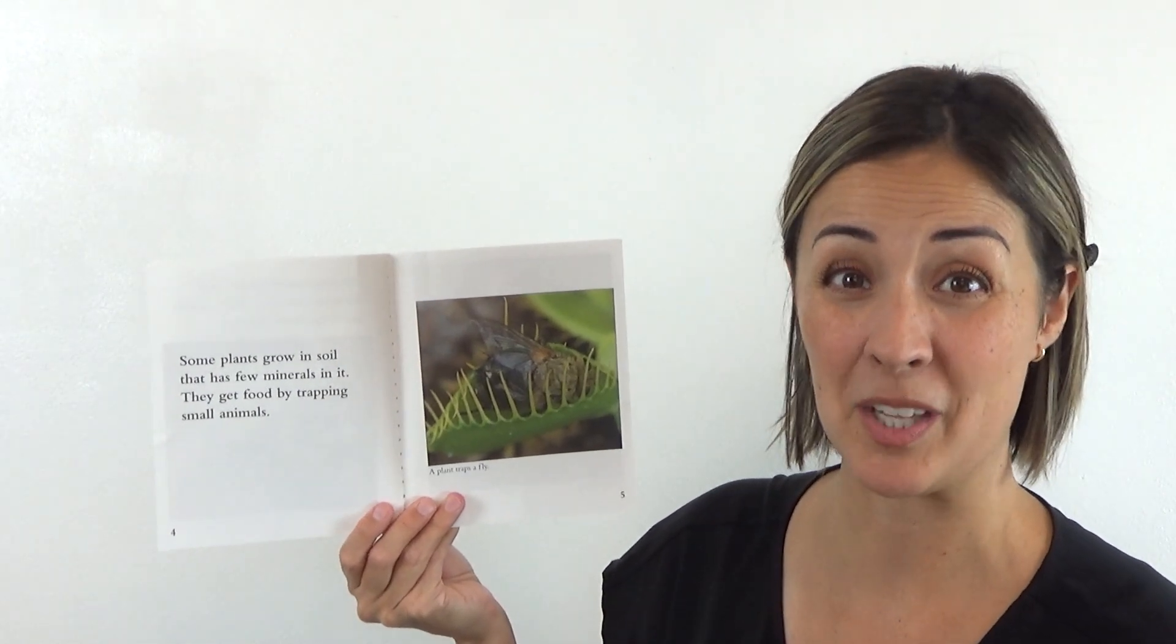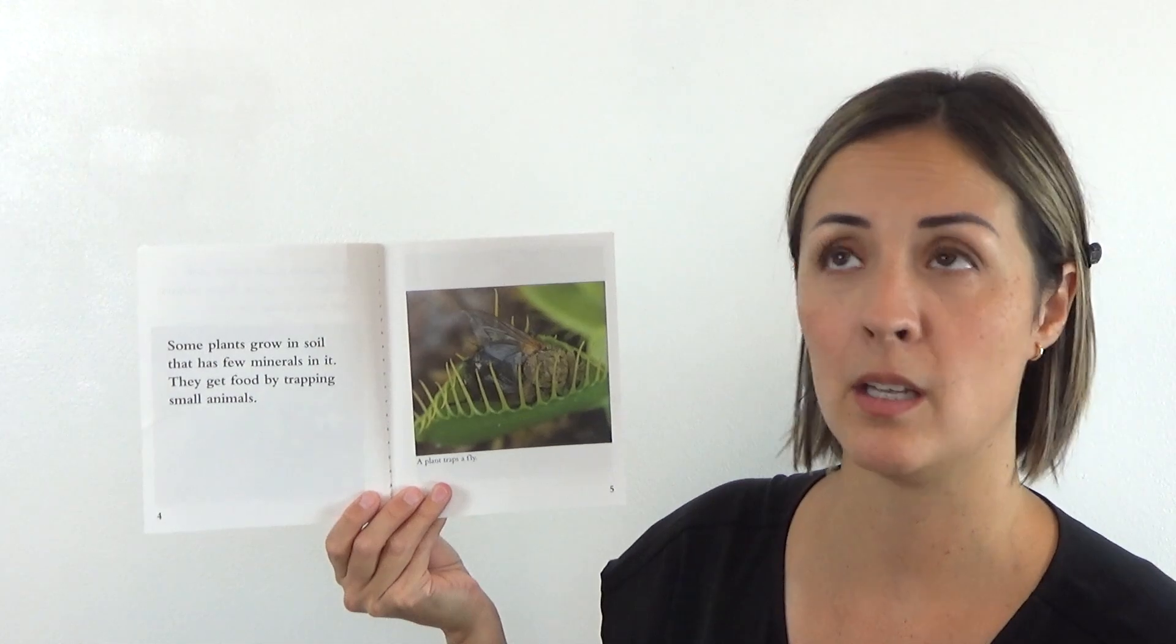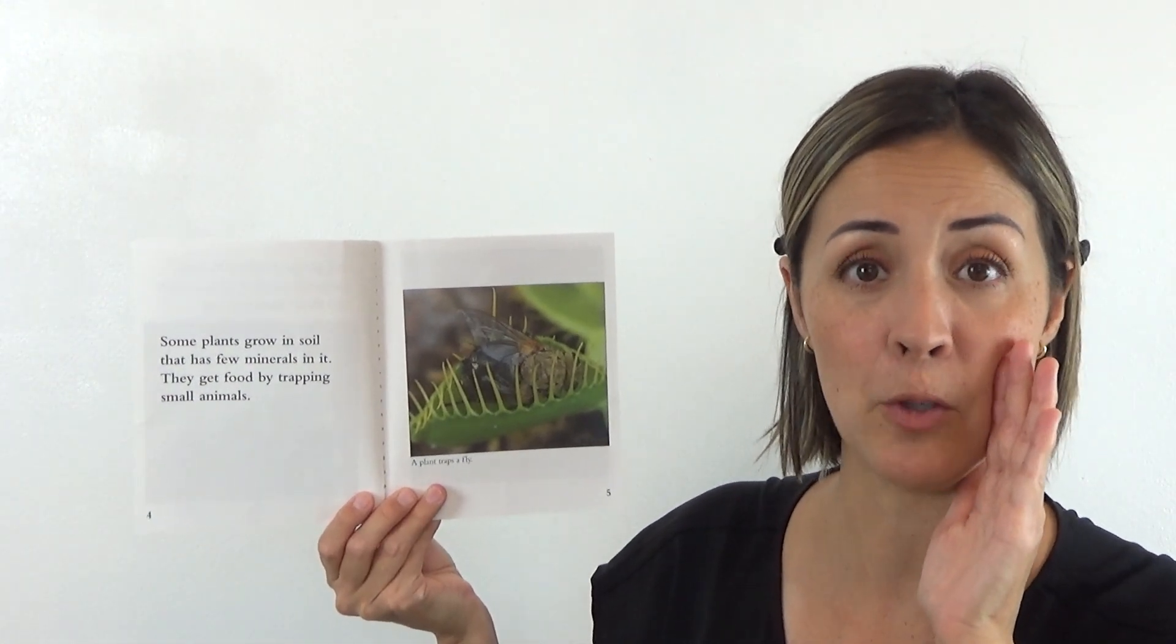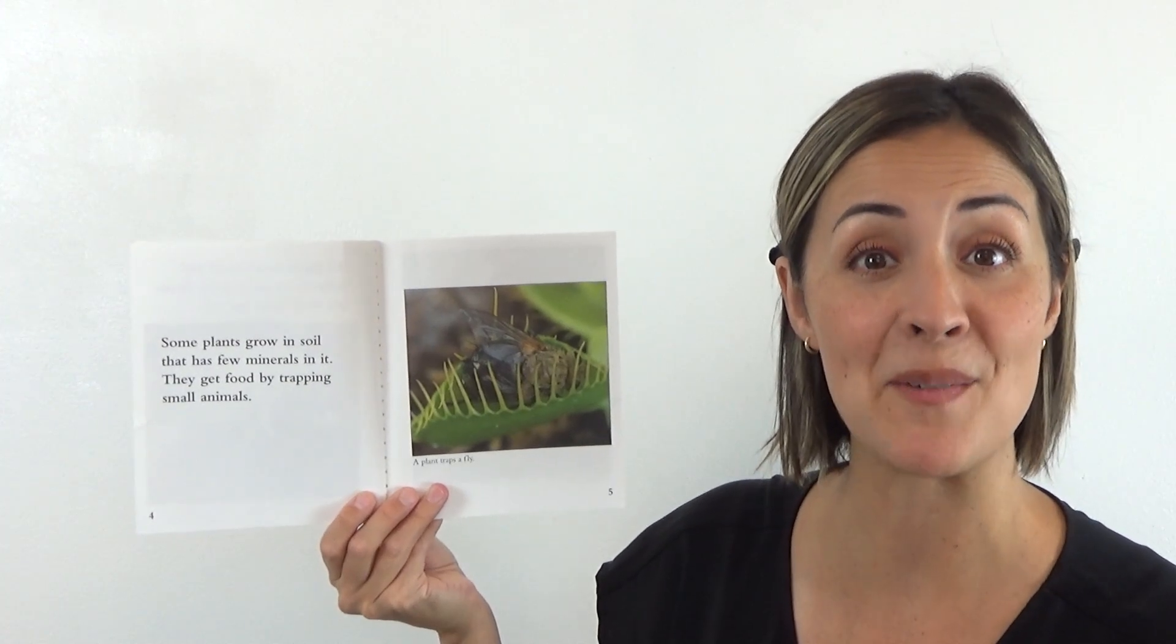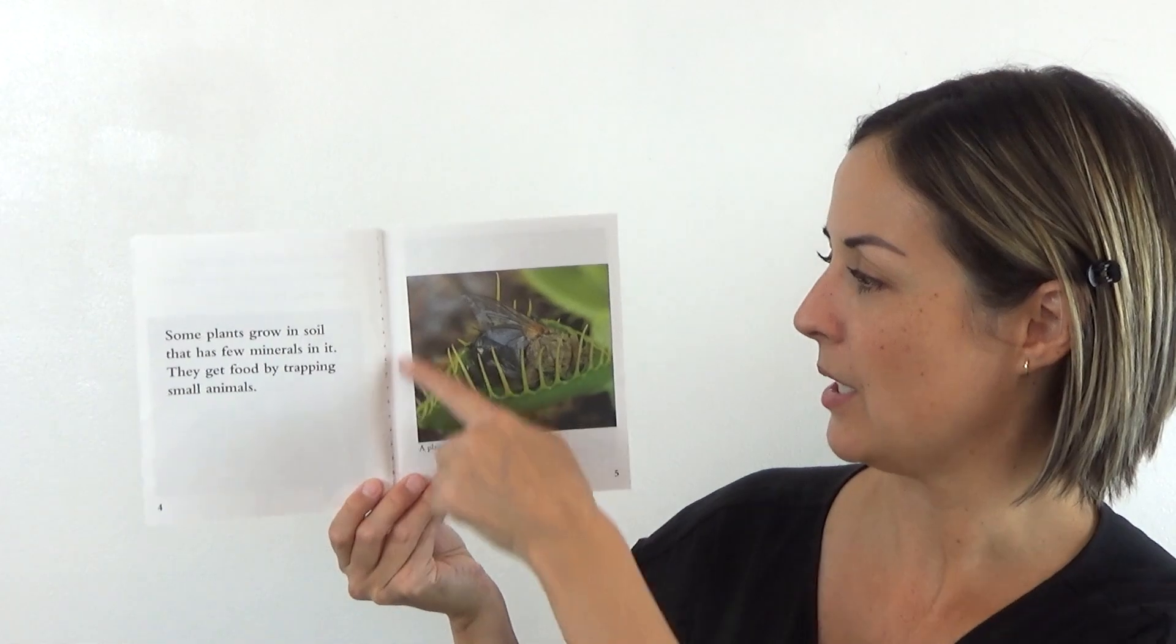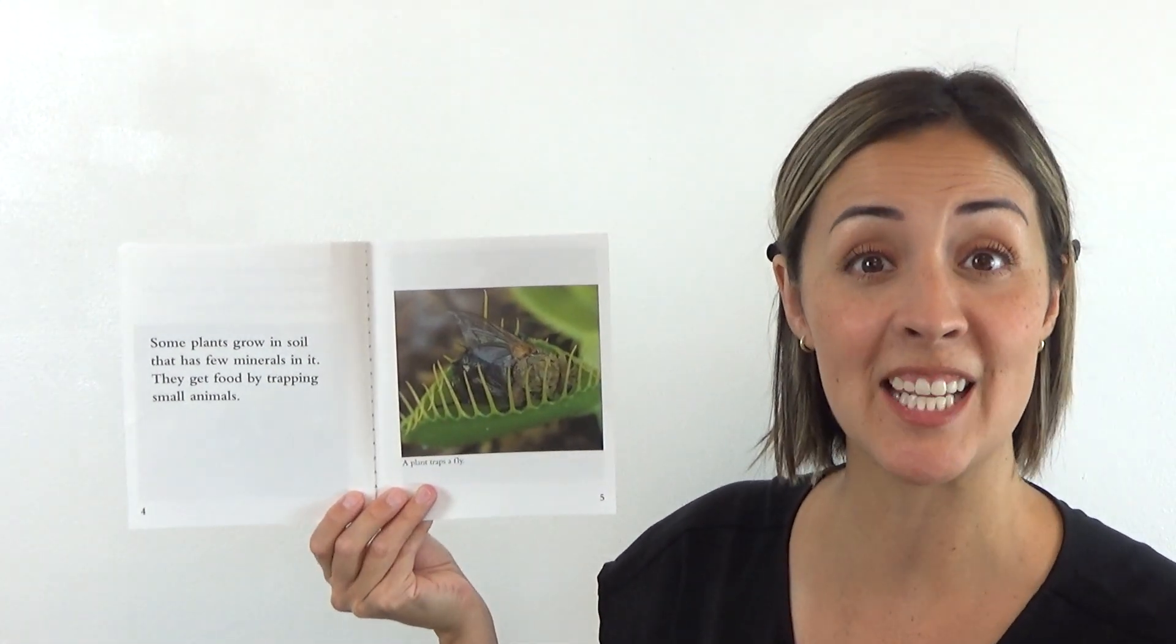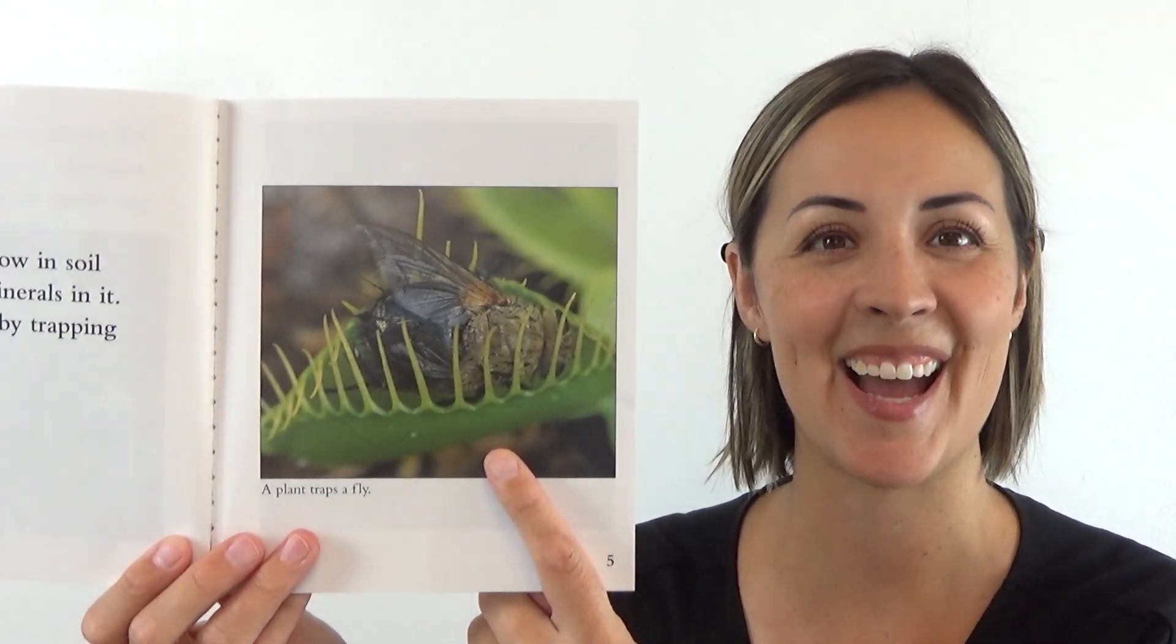Uh-oh. But did you know this? Some plants grow in soil that has few minerals in it. If the soil doesn't have enough nutrients, they get food by trapping small animals or sometimes we call them insects. So you can see in this first picture, it's a Venus flytrap that has caught a fly. Look at that.